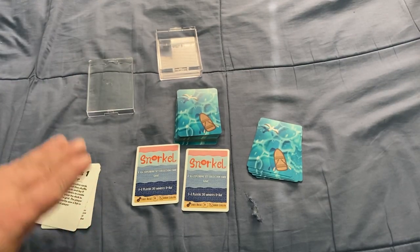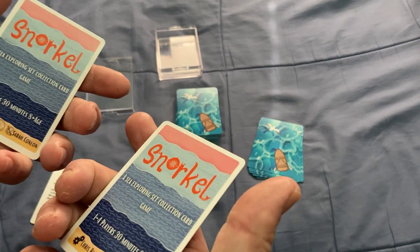If you know how to play today, we're going to look at how to play the game Snorkel, which is for one to four players. Takes about 30 minutes. It is 8 and up. It's a little sea exploring set collection card game, as it says on these little ad cards. It is by B5 Productions with the design by Chris Back and the art by Sarah Conlon.